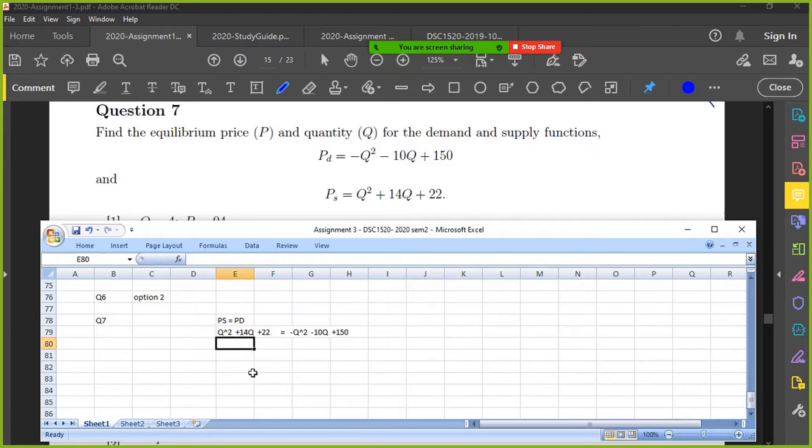Okay, let's take that all to one side. So, I'm going to have 2Q squared. Plus 10Q, so that's 24Q.